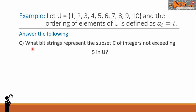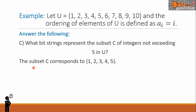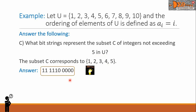Letter C: what bit strings represent the subset C of integers not exceeding 5 in U? The subset C corresponds to the set with elements 1, 2, 3, 4, and 5. So the answer is: 1 1 1 1 1 0 0 0 0 0. This is the final answer.